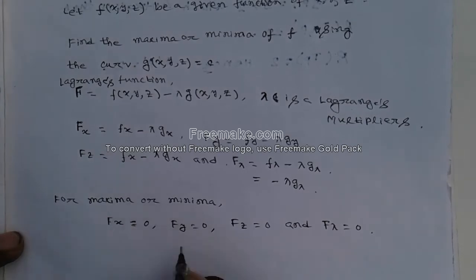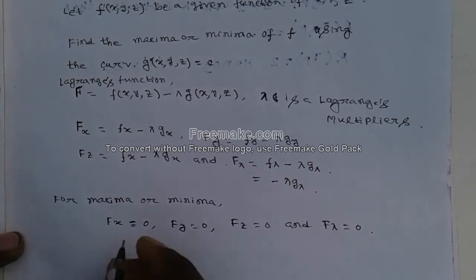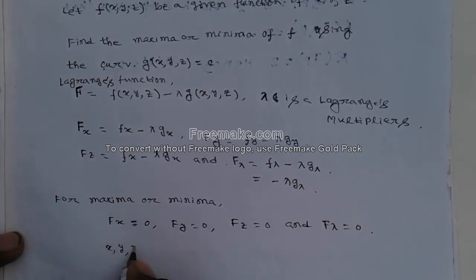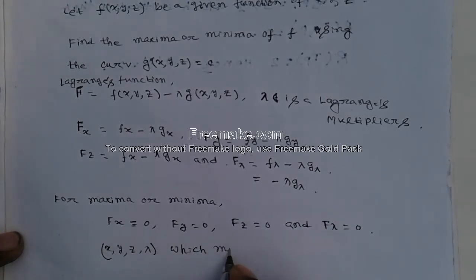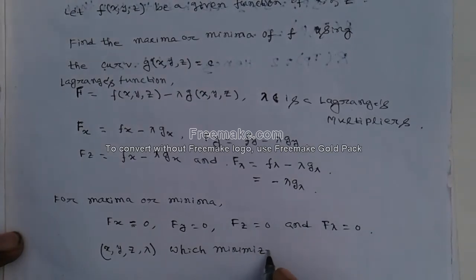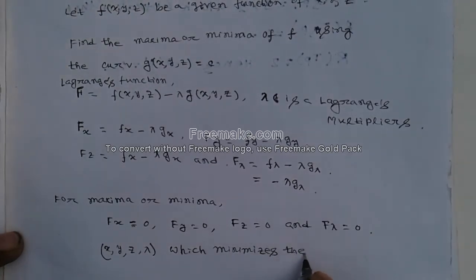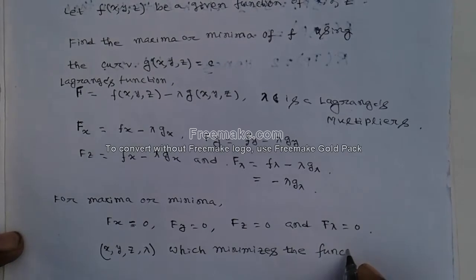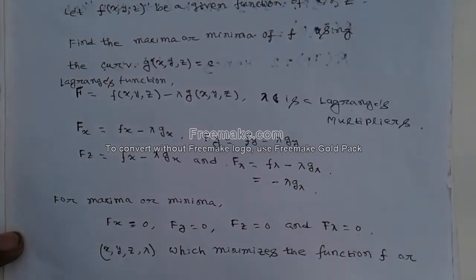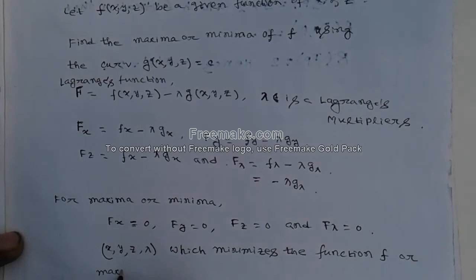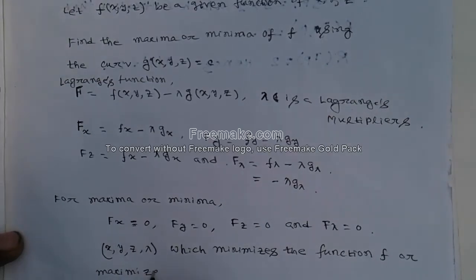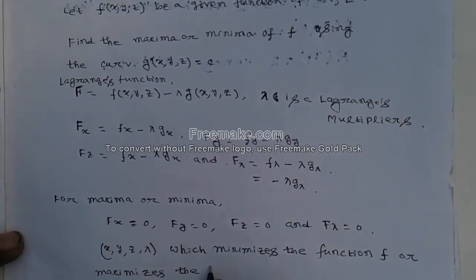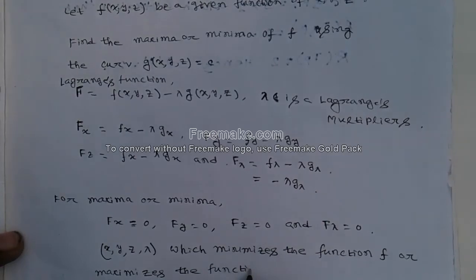For maxima or minima, we set Fx equal to 0, Fy equal to 0, Fz equal to 0, and F-lambda equal to 0. From these four conditions, we solve for the four variables x, y, z, and lambda, which minimize or maximize the function f.